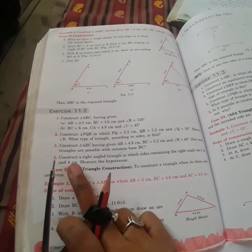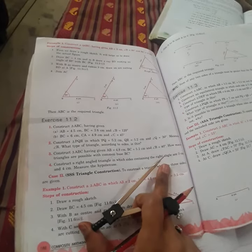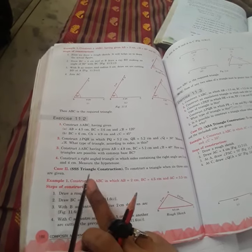This is the fourth question: Construct a right angle triangle in which sides containing right angles are 3 centimeter and 4 centimeter. Measure the hypotenuse. In this we have to make a right angle triangle where the right angle is forming, and those sides should be 3 centimeter and 4 centimeter.